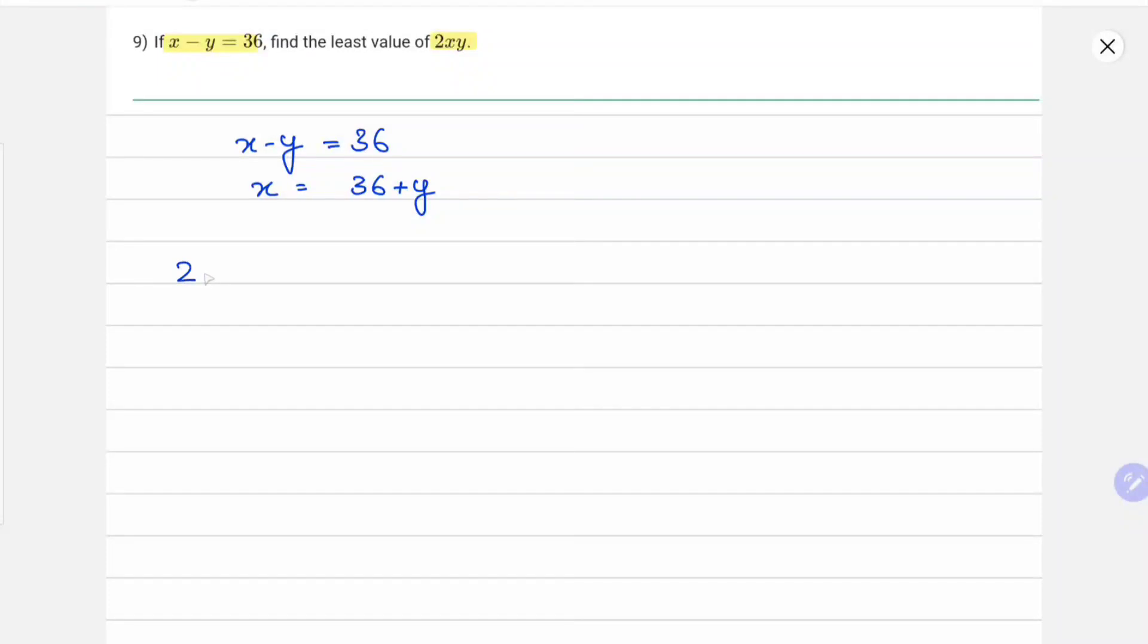And in that way, 2xy becomes 2 into 36 plus y into y, which gives us 72y plus 2y squared. We have to find the least value of this, so let's make it a function: f equals 2y squared plus 72y.